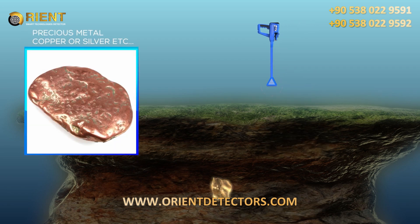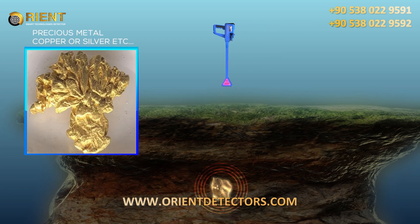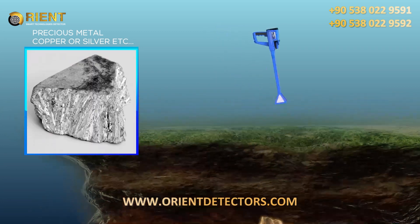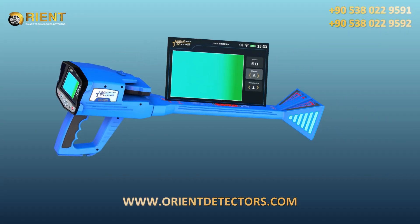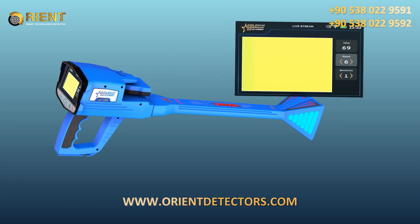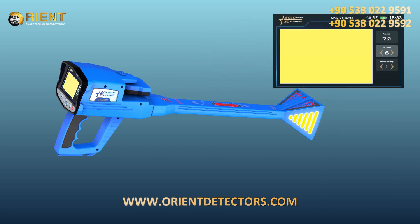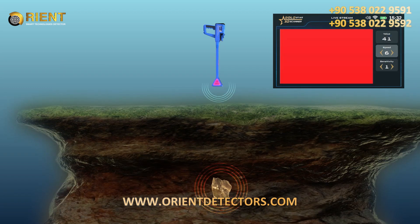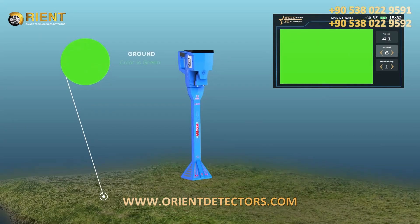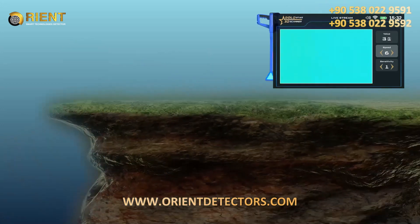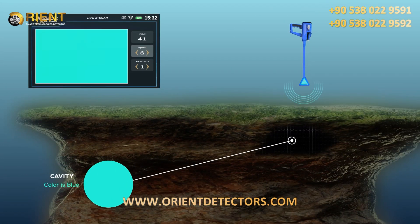The LED lights up red when passing over a precious metal, such as copper or silver. The signals captured by the VST probe are represented on the screen of the device as a continuous color stream that changes colors according to the type of potential target. Similarly, the color will be red when capturing a precious metal signal, green for the ground, and blue for cavity.